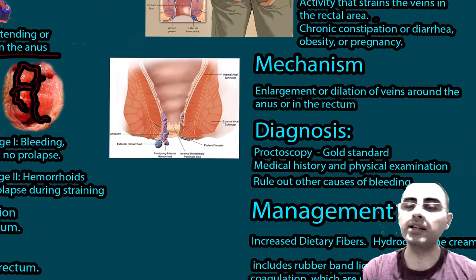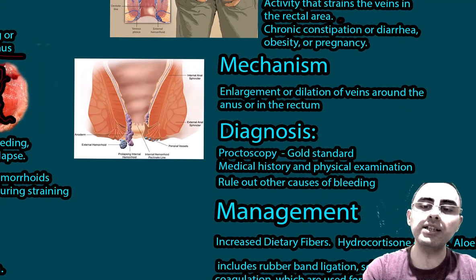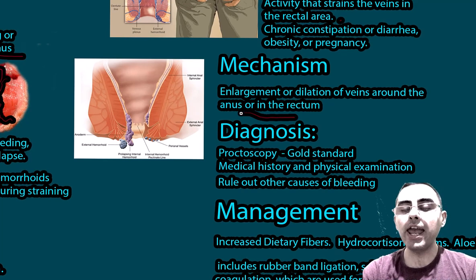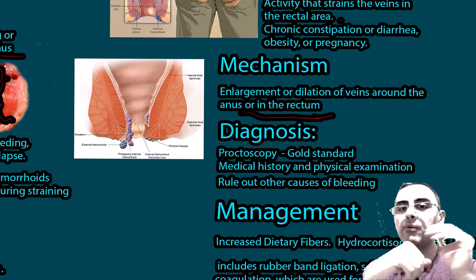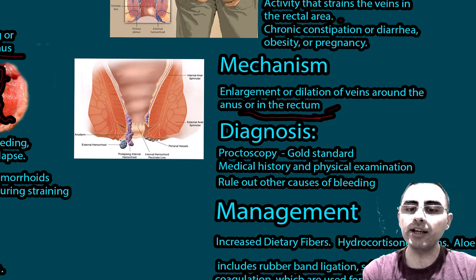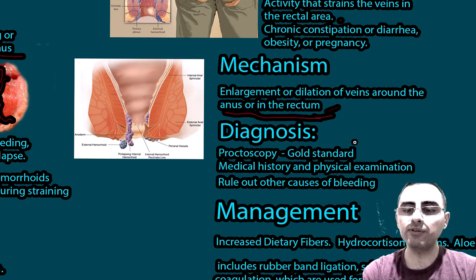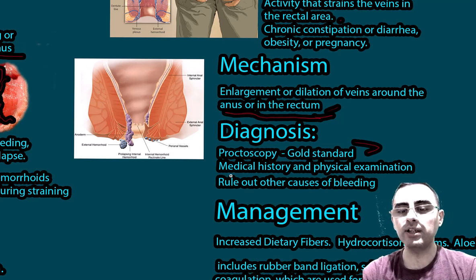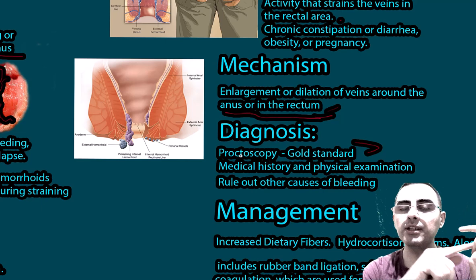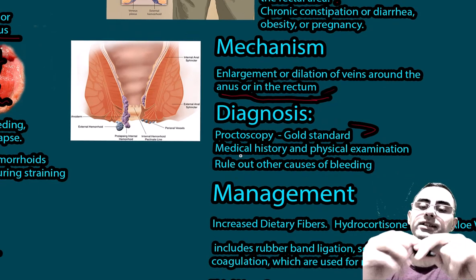The mechanism of hemorrhoids involves enlargement or dilation of veins around the anus and rectum. When the surrounding tissues, such as muscles and connective tissue around these blood vessels, are weakened, dilation occurs. Regarding diagnosis, proctoscopy is the standard, along with medical history and physical examination. Importantly, other causes of bleeding such as polyps or cancer must first be ruled out.